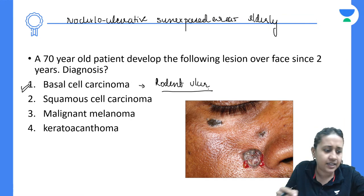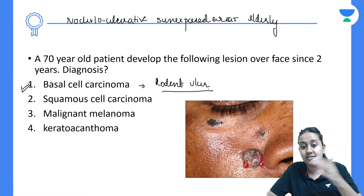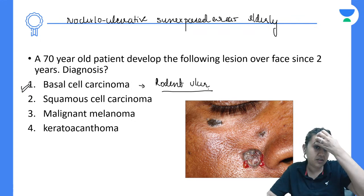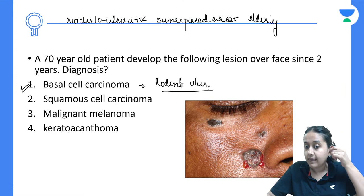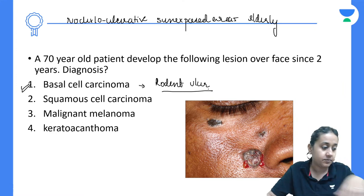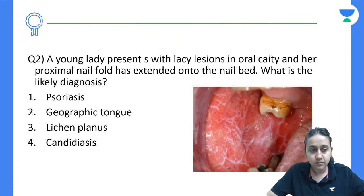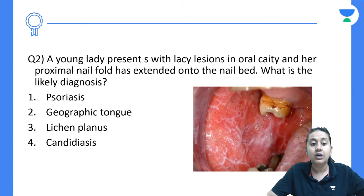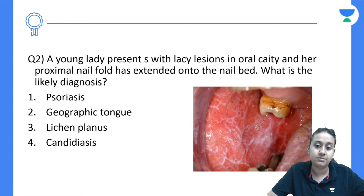Basal cell carcinoma is a very slowly growing tumor — it neither metastasizes through blood nor lymphatics, which is why it is sometimes known as rodent ulcer. It destroys structures it comes in contact with. For treatment, we do surgery — microscopic Mohs surgery — where we remove tumor cells sequentially to preserve maximum normal skin.